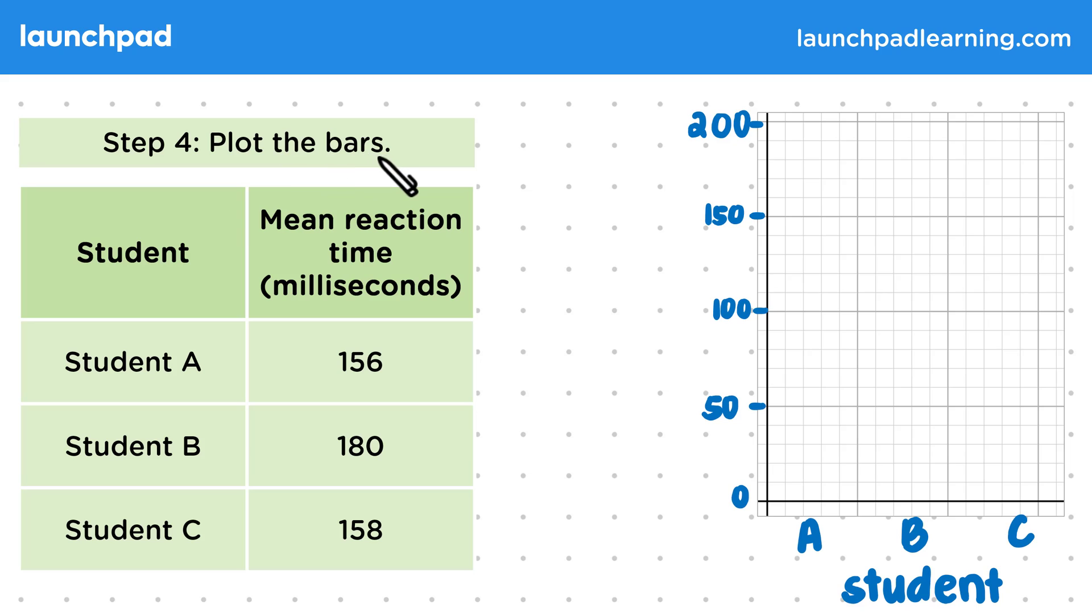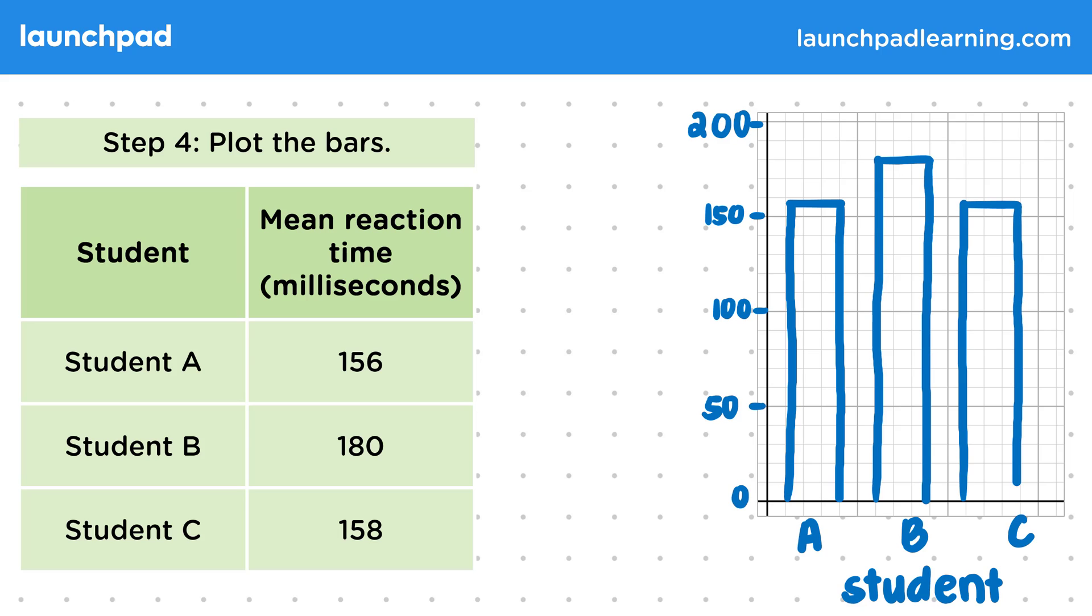Step four, plot the bars. So these bars are going to be showing us the reaction time. And remember, this is going to go on the X axis using the scale on the Y axis. When you're plotting a bar, draw a line for the height first and then draw the rest of the bar. The width of them doesn't matter as long as it's consistent, centered, and that the gaps between the bars are also consistent.